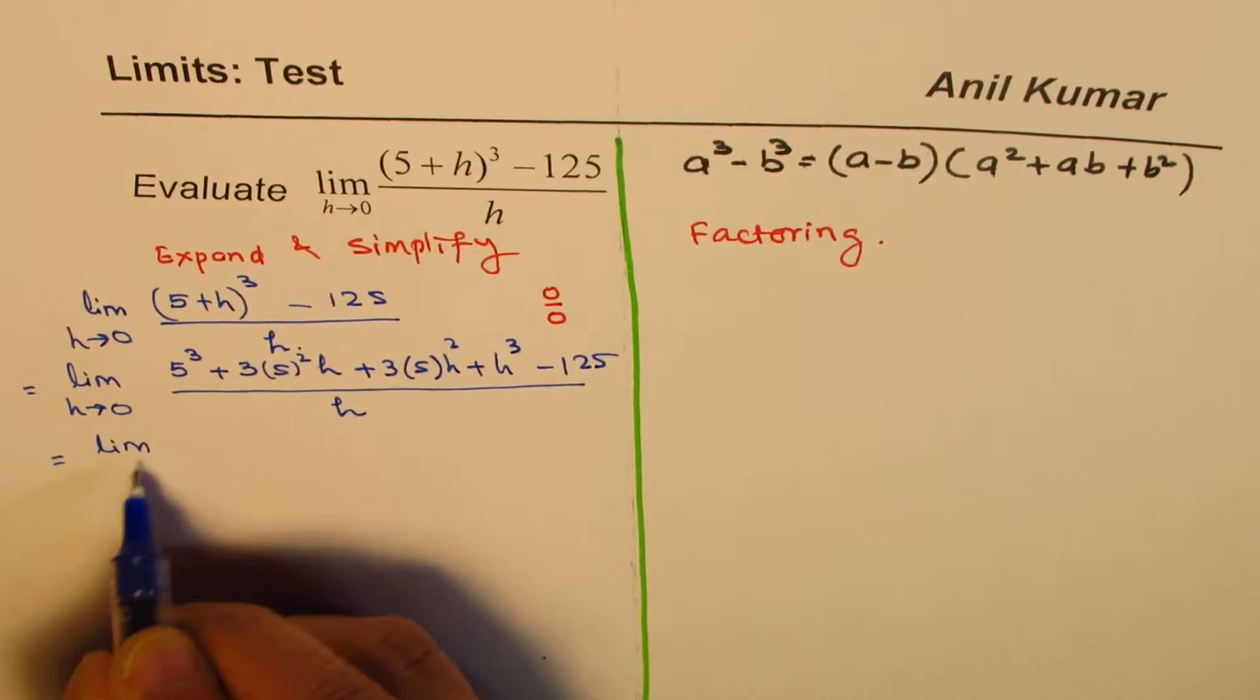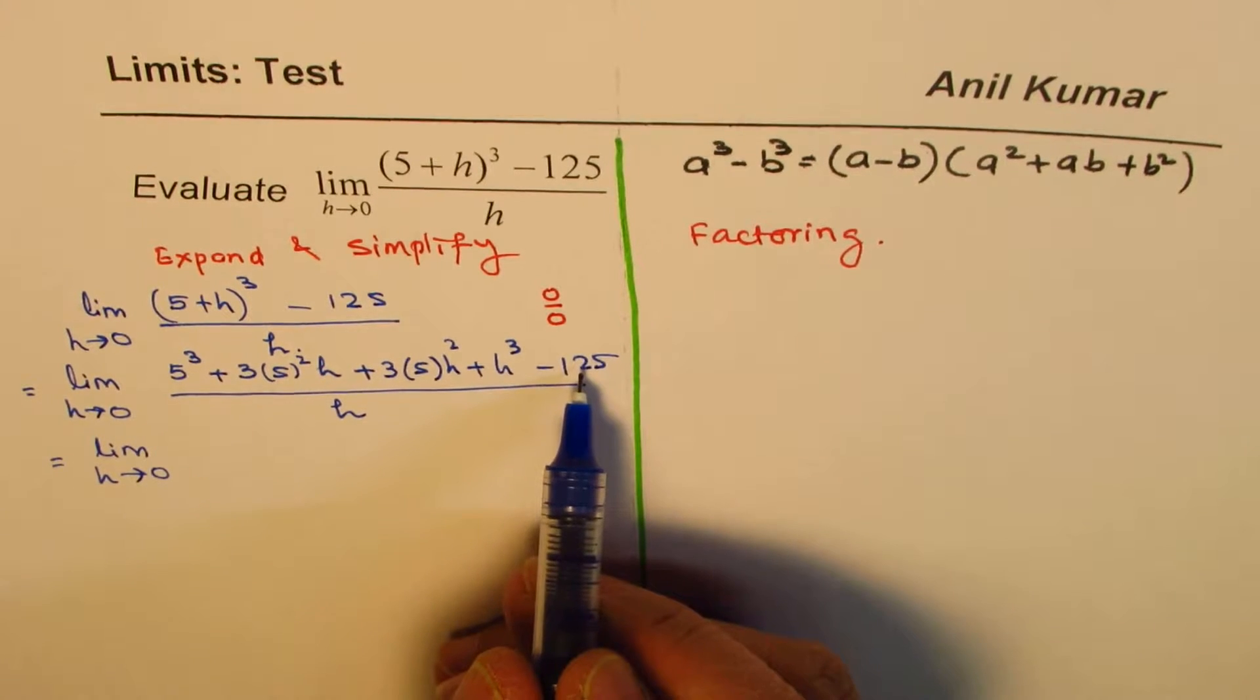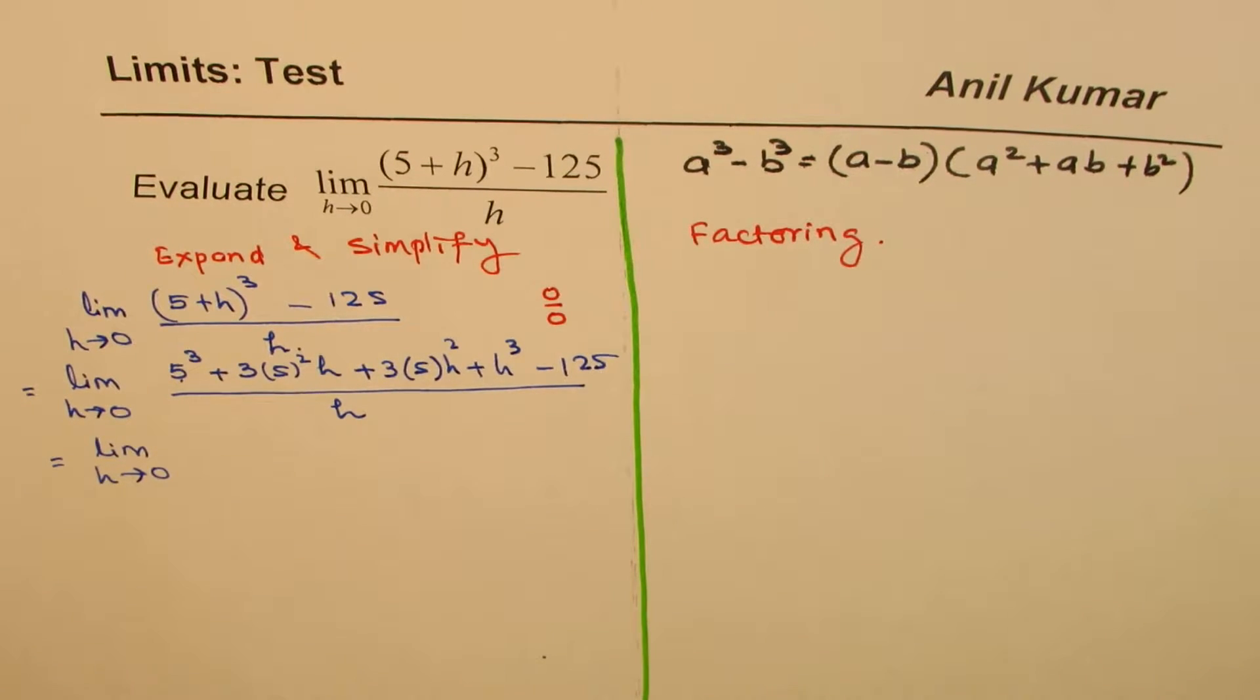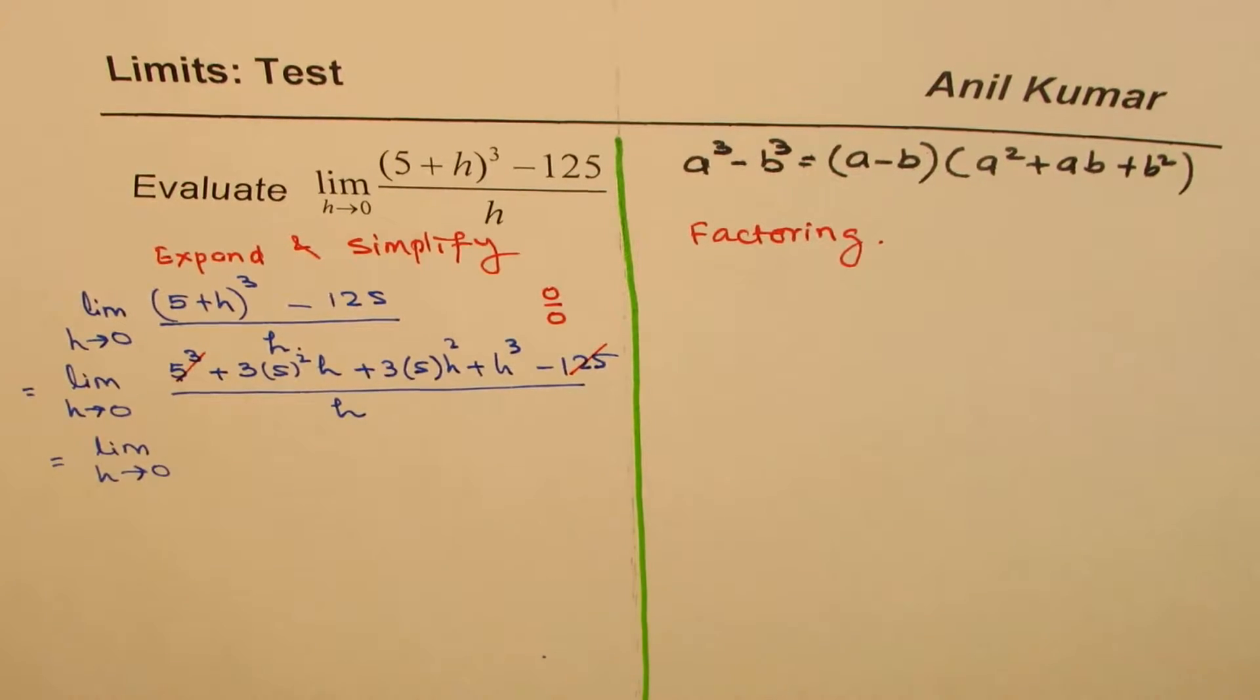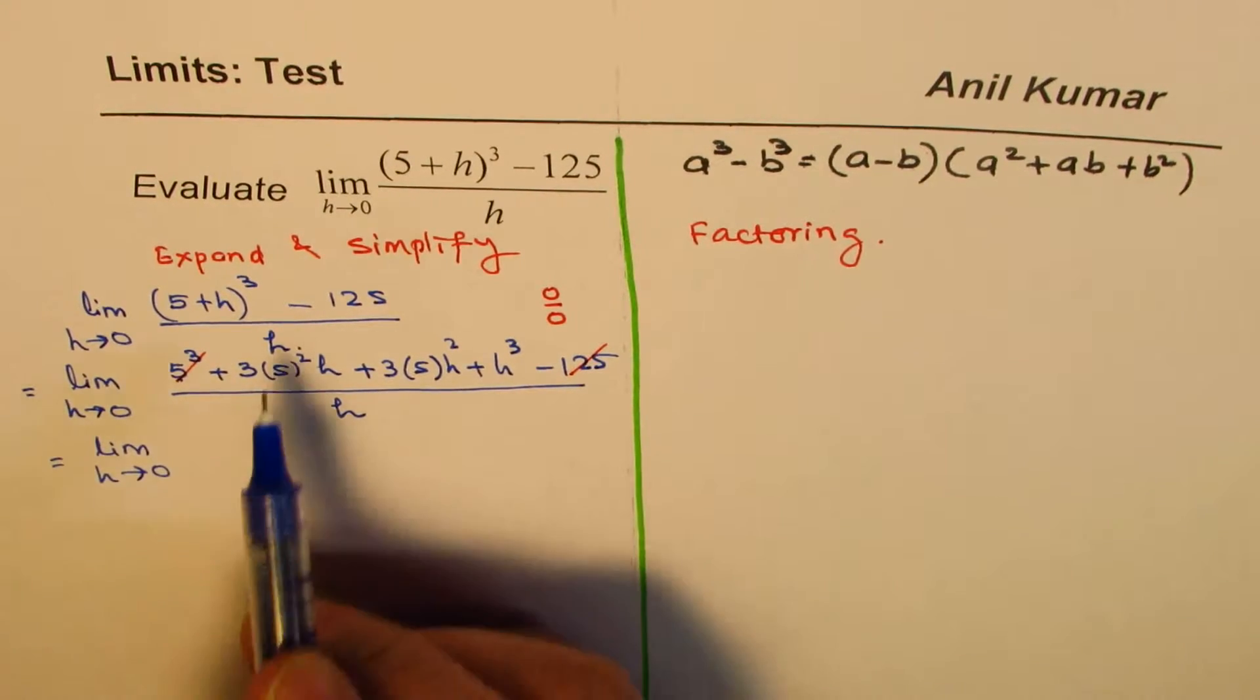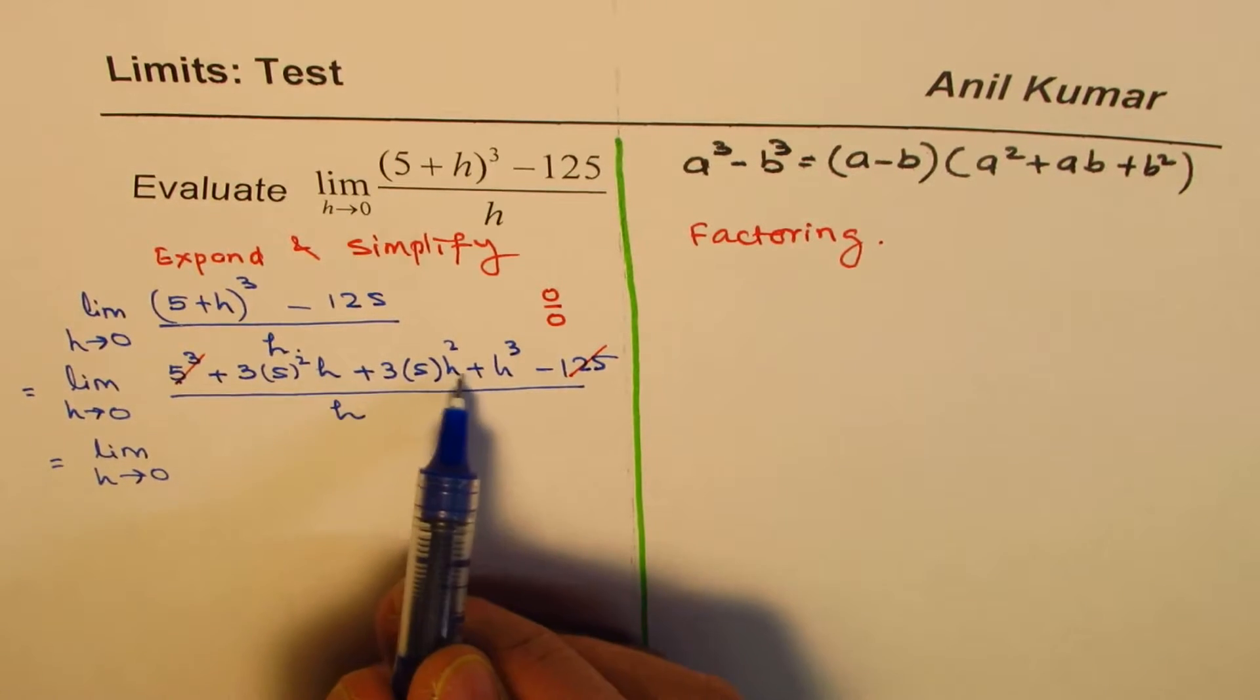That gives us limit h approaches 0. Now, 5 cube is 125, right? So, 5 cube and 125 cancel out. I mean, that becomes 0. I am just canceling. That becomes 0.